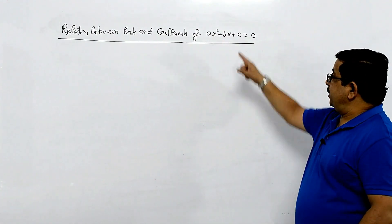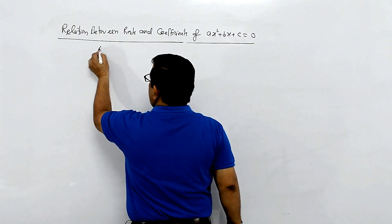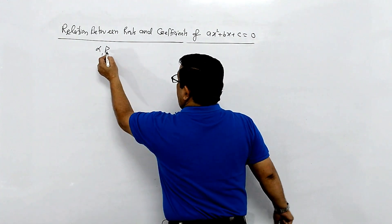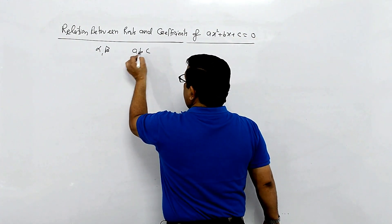We know that the roots are alpha and beta, and a, b, c are the coefficients.